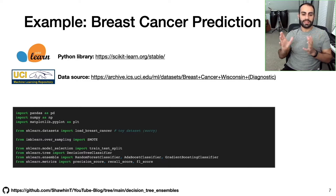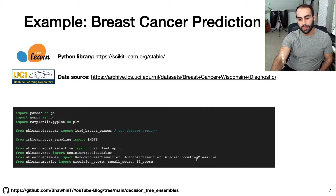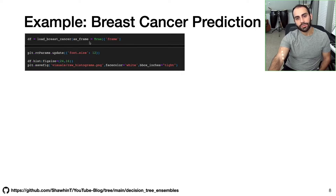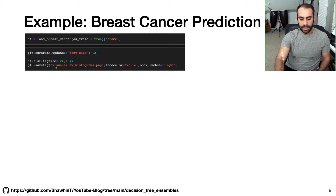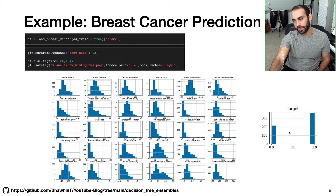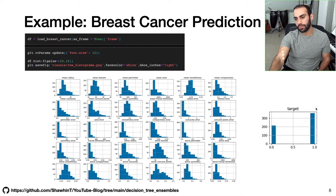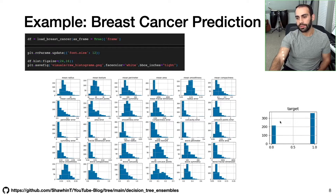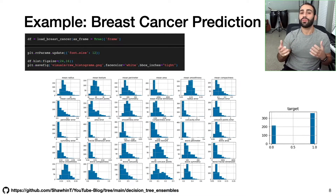sklearn makes it super easy to import this toy data set with just one line of code, giving us a pandas data frame. It's always good practice to plot the histograms of your data — here are all the predictor variables at our disposal, and here is our target variable. This goes back to the imbalanced data set idea: we see there are a lot more cases where the breast tumor is benign as opposed to malignant. While we could apply SMOTE to synthetically oversample the minority class, we're not going to do that here and will see how the four different models hold up.